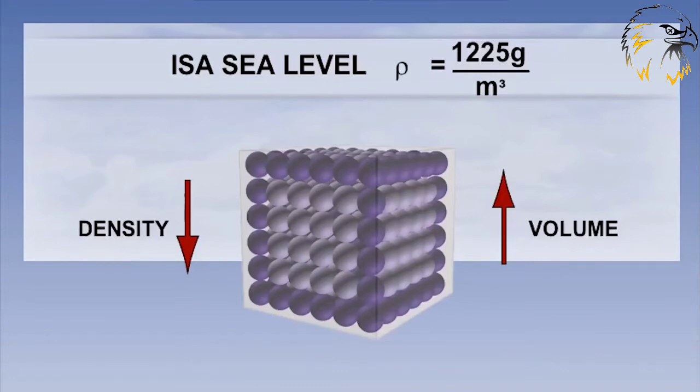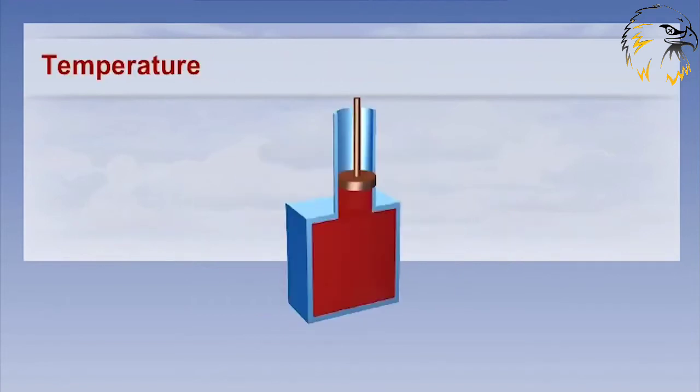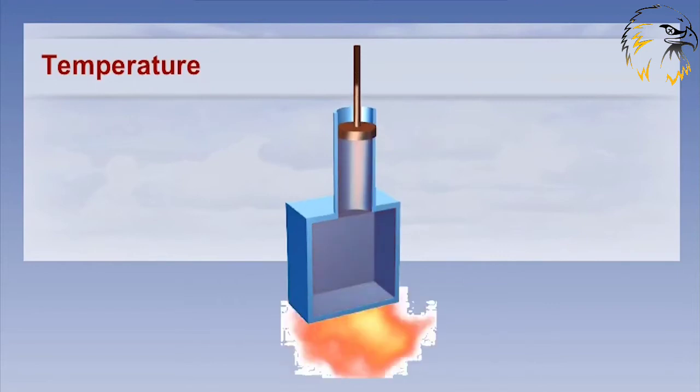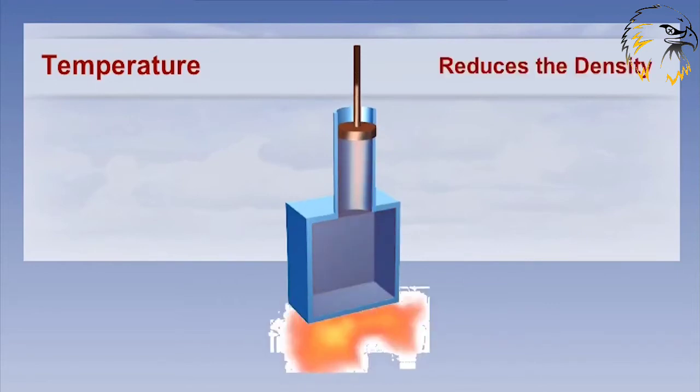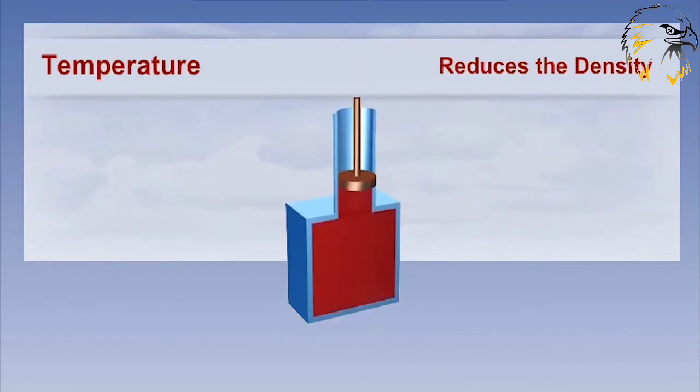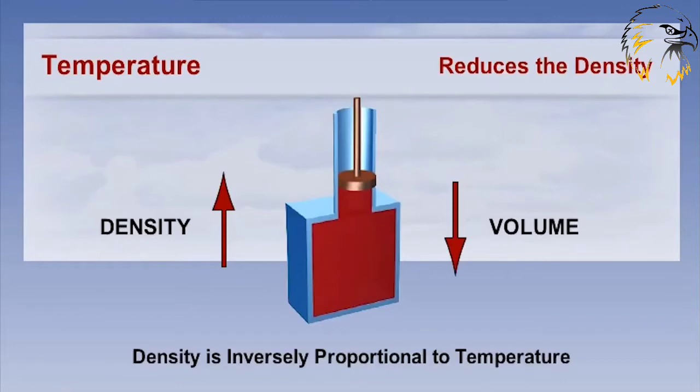The other main variable we mentioned that controls density is temperature. Looking at the diagram, we can see that as we heat a parcel of air, the particles get excited and cause the parcel to expand. This reduces the density. The mass is staying the same but the volume of air is increasing. Conversely, if we cool the parcel down, it will shrink and the density will increase. Again, the mass is remaining the same but we are reducing the volume. We can therefore say that density is inversely proportional to temperature.